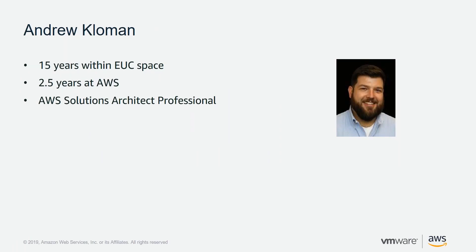I'm Andrew Gloman, a partner solutions architect here at AWS. I'm also the global technology lead for end user computing partners. I've been in the space for about 15 years, and at AWS for a little bit over two and a half years. Earlier this year I got my solutions architect professional certification, which I'm pretty proud of — it's pretty hard to get. If you're looking at AWS certifications, check out the solutions architect associate, then look into the professional one.